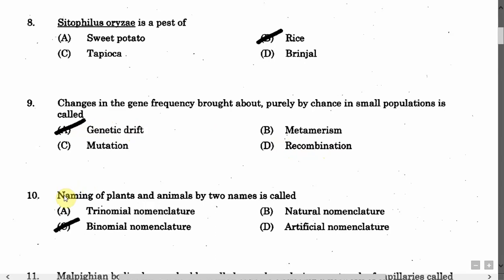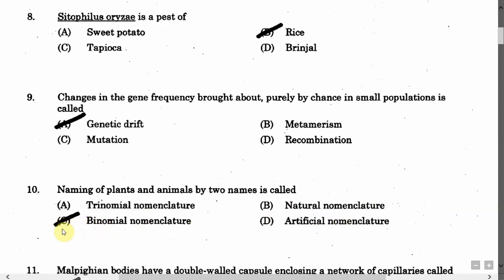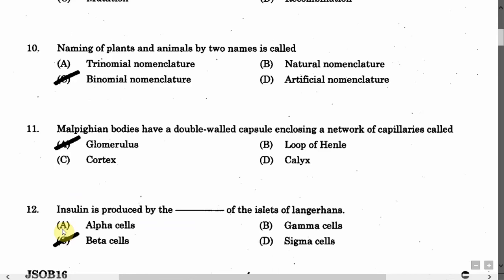The next question is: Naming of plants and animals by two names is called — Option A: Trinomial nomenclature. Option B: Natural nomenclature. Option C: Binomial nomenclature. Option D: Artificial nomenclature. The correct answer is Option C, that is binomial nomenclature, which was given by Carlos Linnaeus.